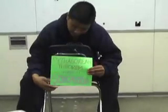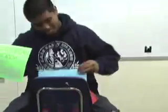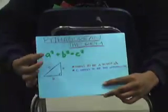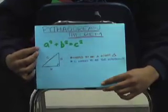My topic is the Pythagorean Theorem and SOHCAHTOA. This is the Pythagorean Theorem. The formula is a squared plus b squared equals c squared.